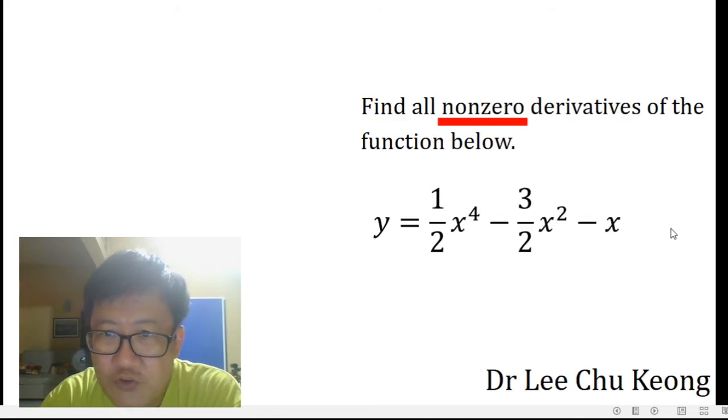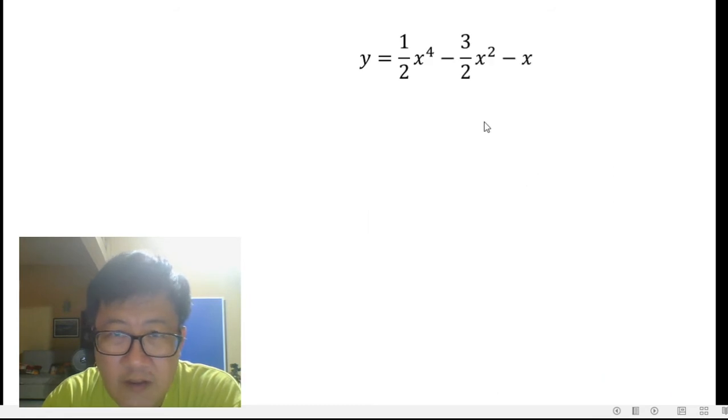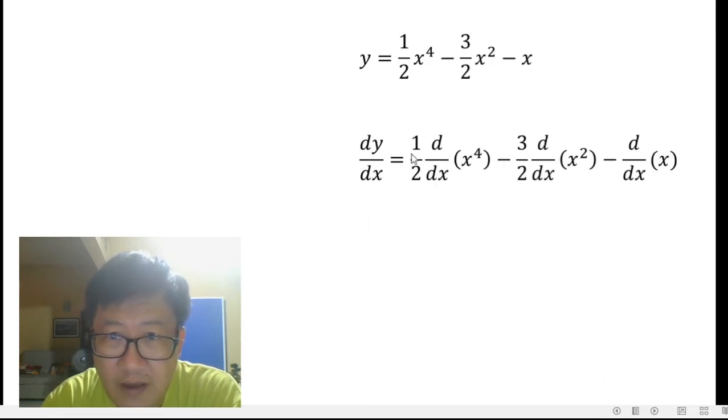This is the function from the question, and the first derivative goes like that. So it's half, and you differentiate x to the power of 4, minus 3 over 2, so that's retained from there, minus 3 over 2. And you differentiate x squared and minus x, so you differentiate x here. So minus comes from there.